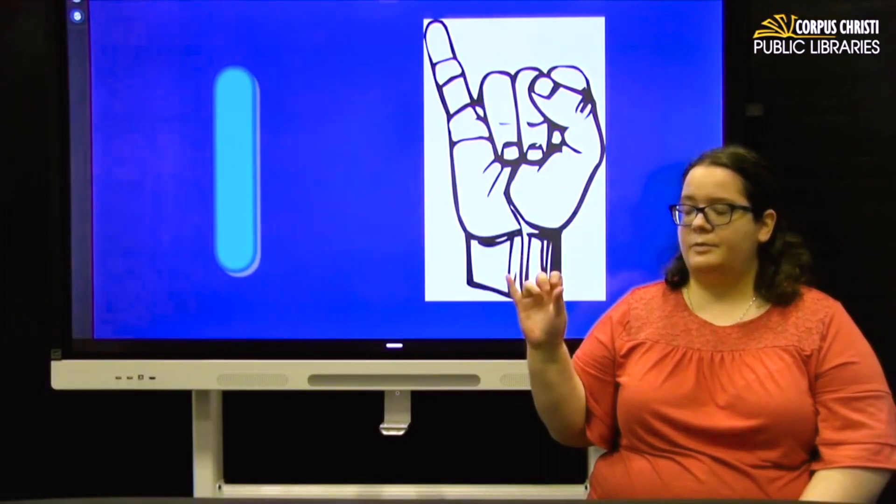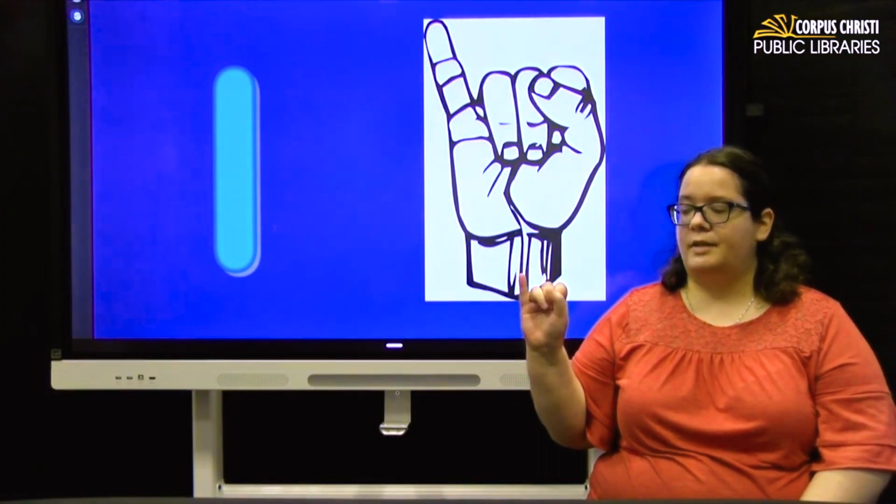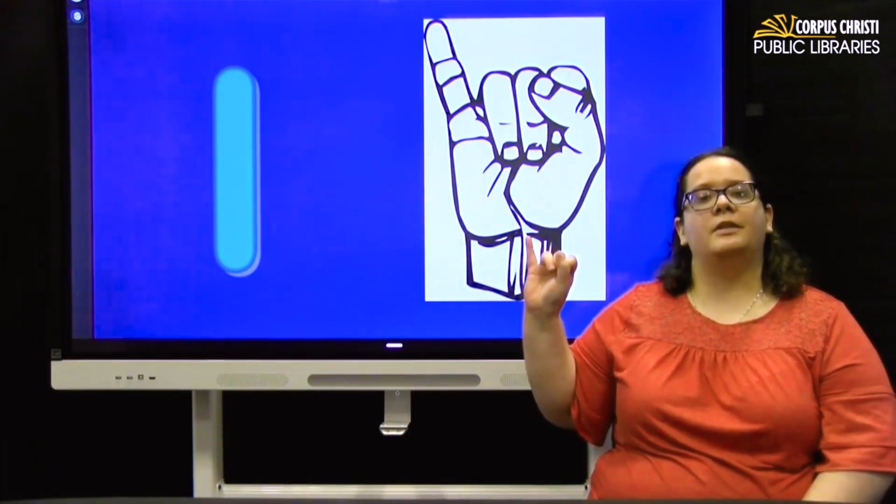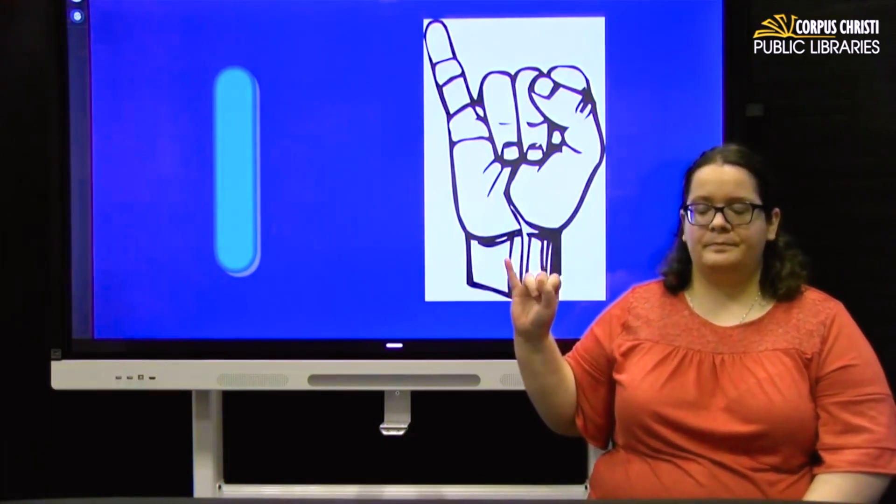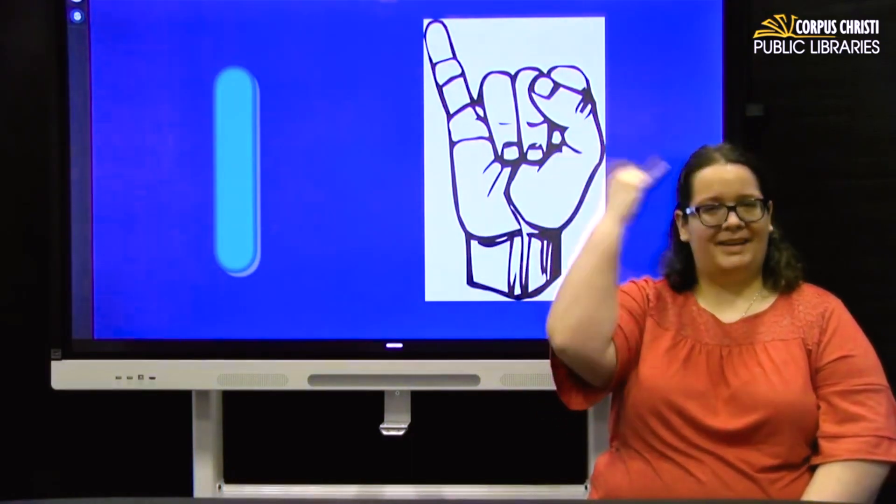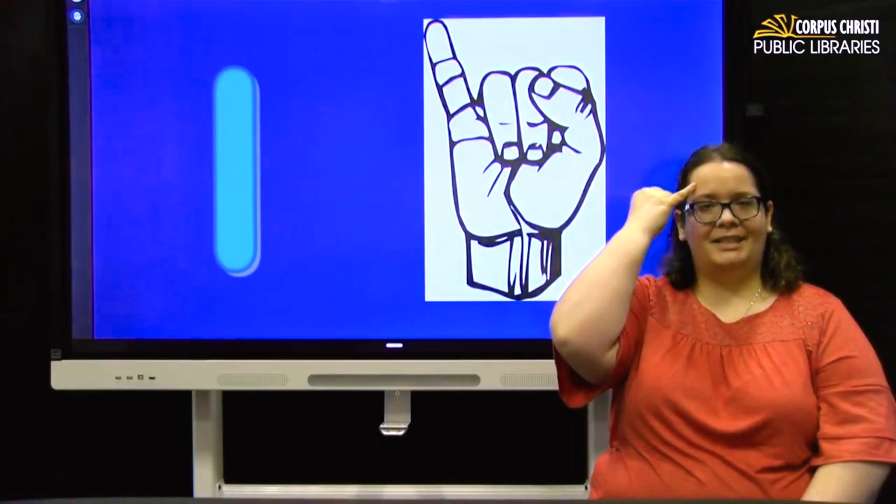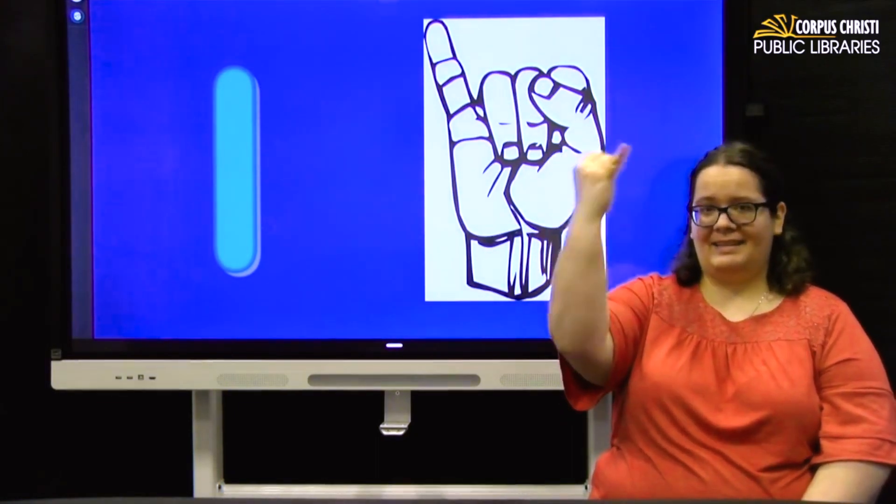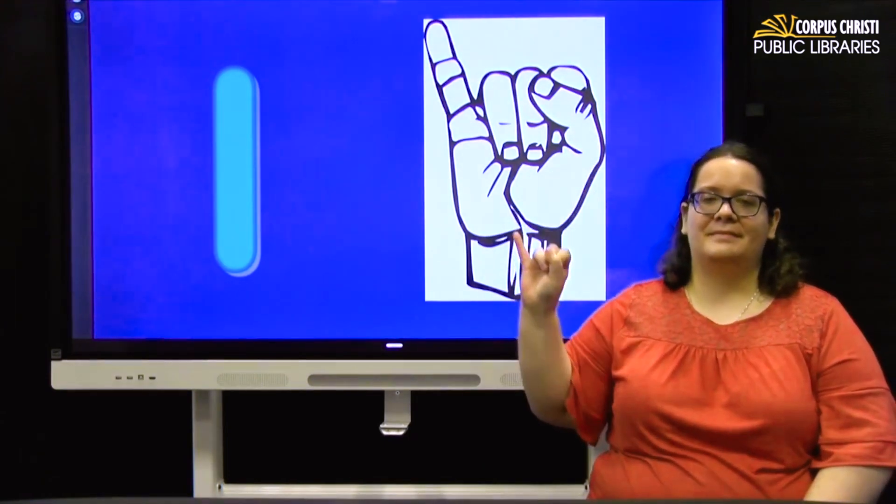I is pretty easy. We're just going to make a fist. Let your thumb rest across your knuckles and hold your pinky out like you're drinking a nice fancy cup of tea. So I. You can use for something like idea. Oh, I have an idea. You're just going to touch the I to your temple and bring it out. Like, aha! Idea. I.